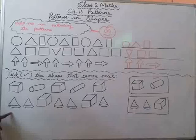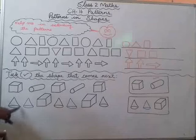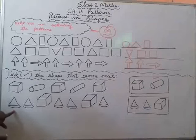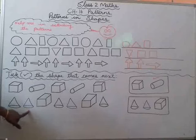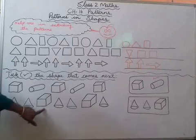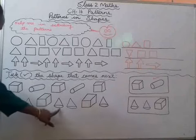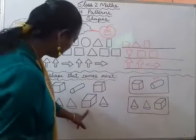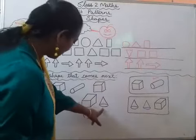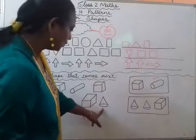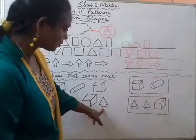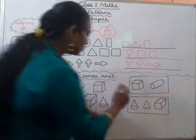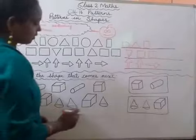This is a cone. Black cone, blue cone, then cube. Black cone, blue cone, then cube. Next — black cone, uske baad what will be the next one? Blue cone. So you have to pick on this.